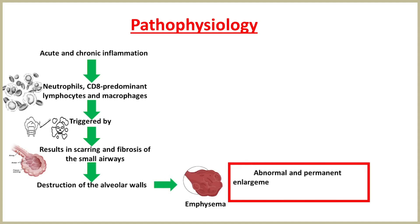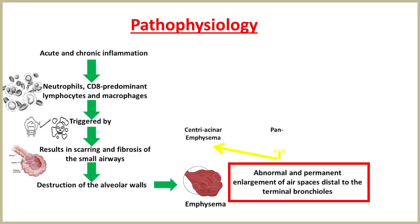Emphysema can be defined as abnormal and permanent enlargement of air spaces distal to the terminal bronchioles, and is classified according to the distribution of damage into three classes: centriacinar emphysema, panacinar emphysema and irregular emphysema.